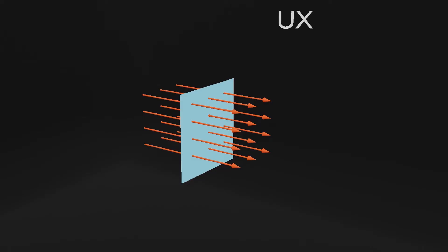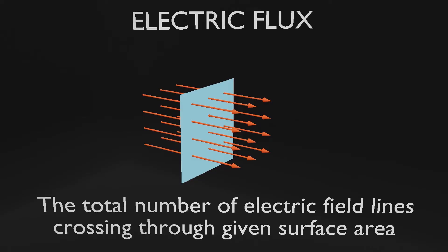Electric flux is the total number of electric field lines crossing through a given surface area. In simpler terms, it is the total electric field lines passing through a specific surface.